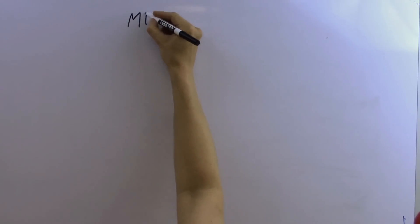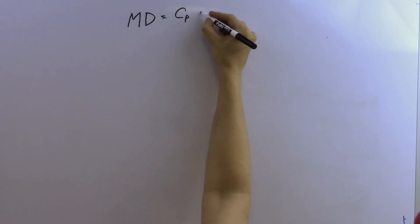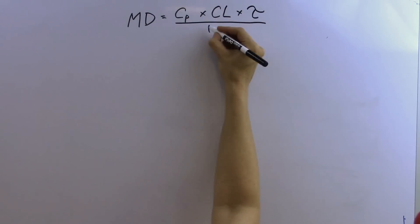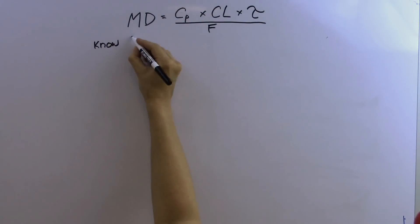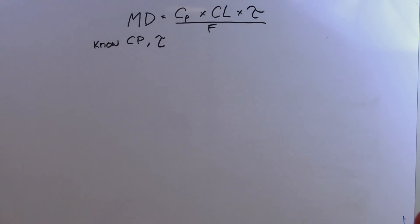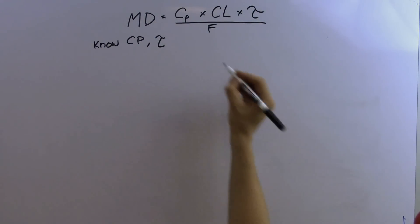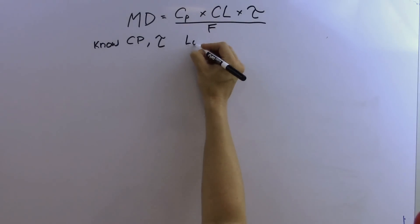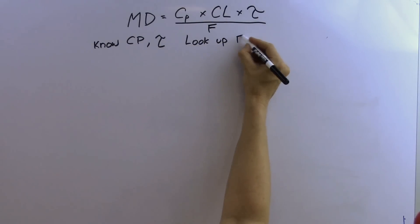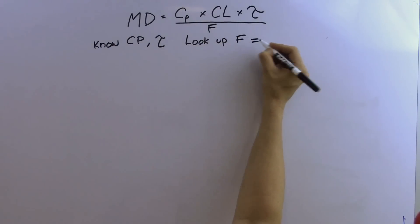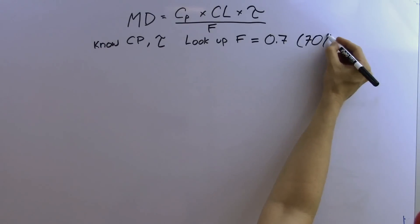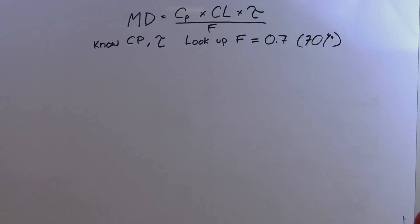Here's our equation for maintenance dose. We know our target plasma concentration and dosing interval. We can look up the oral bioavailability of carbamazepine and find that it's 0.7, or 70 percent.